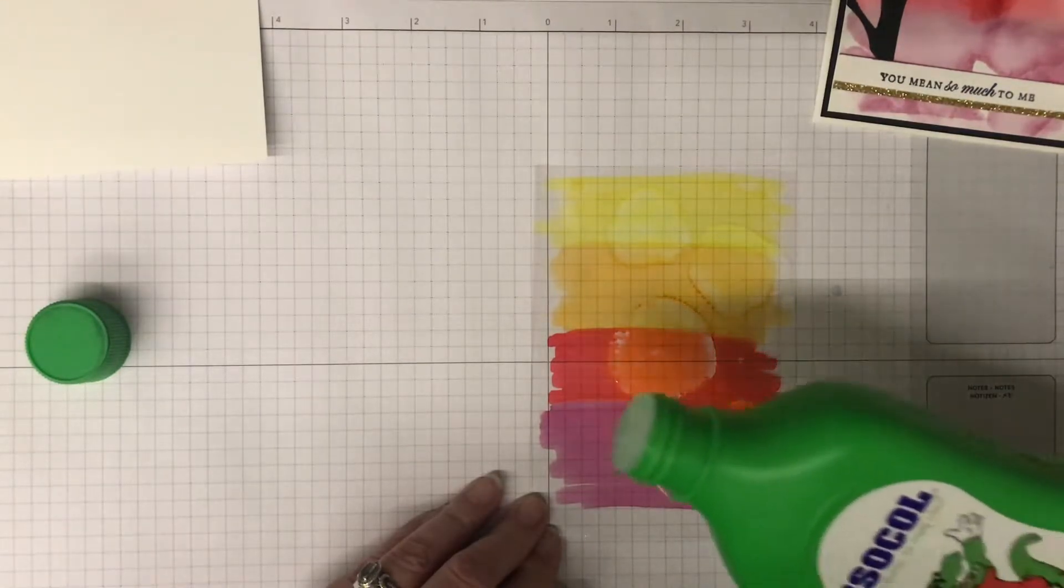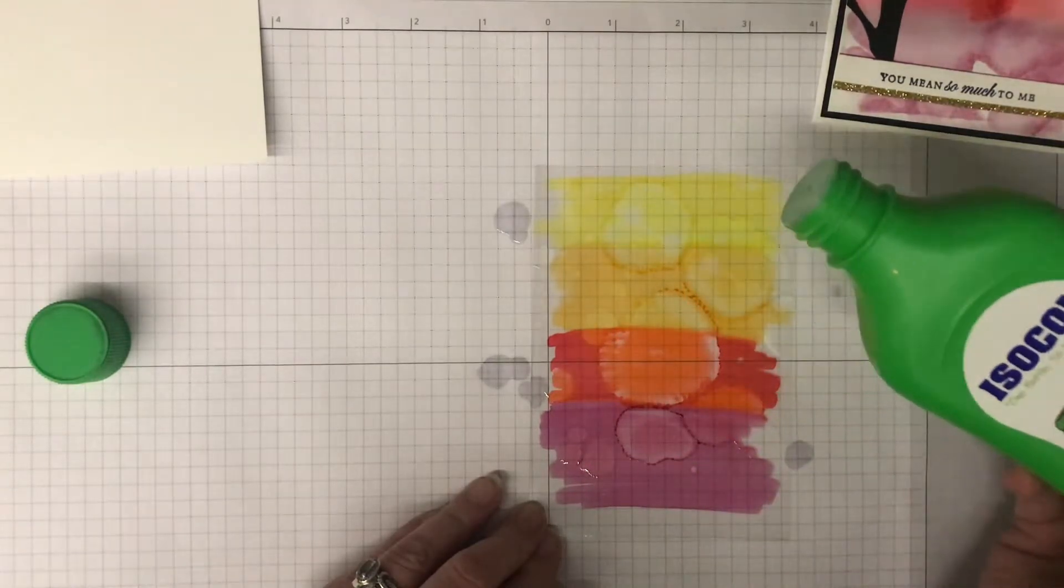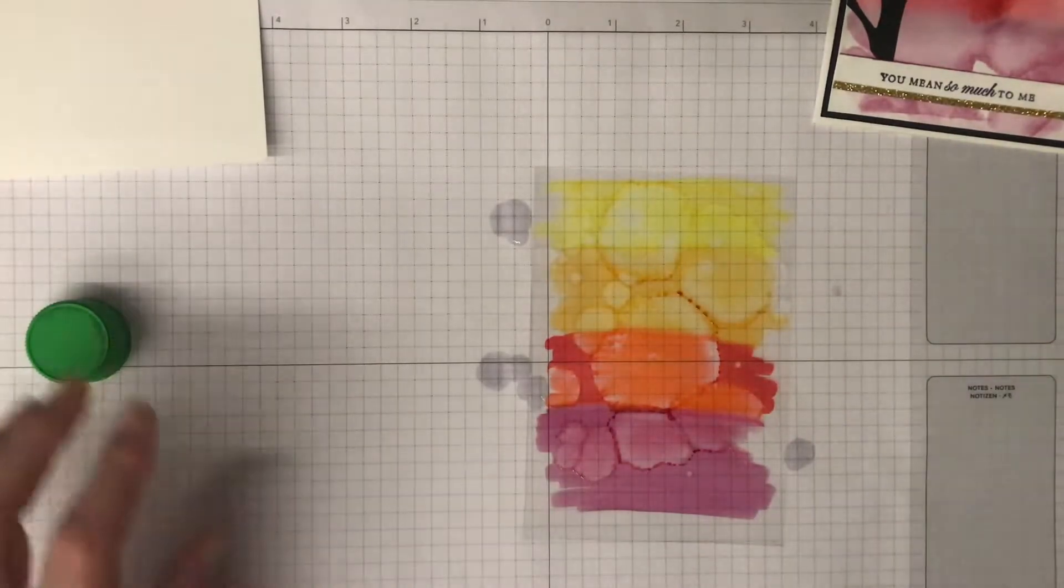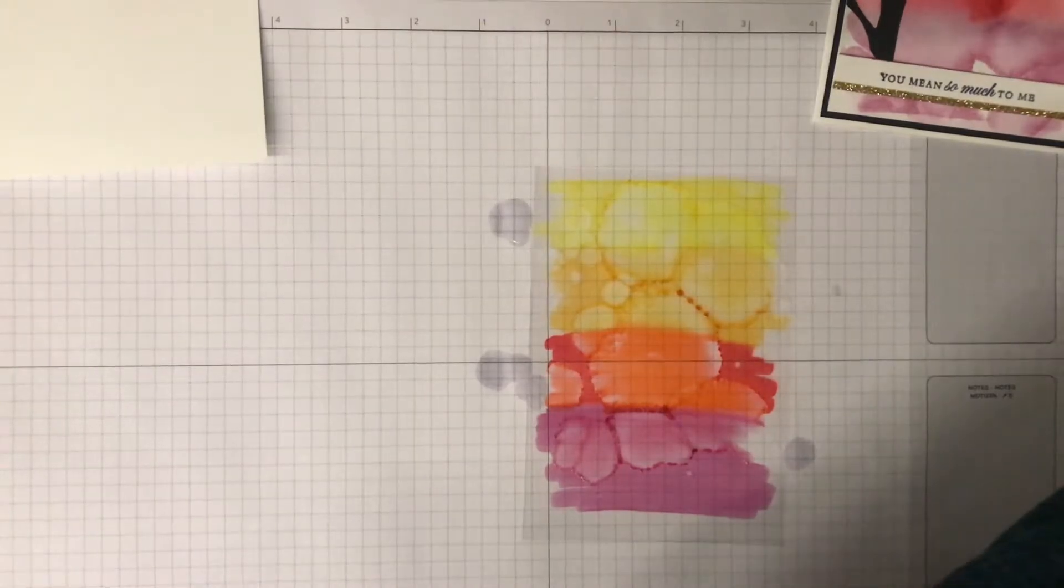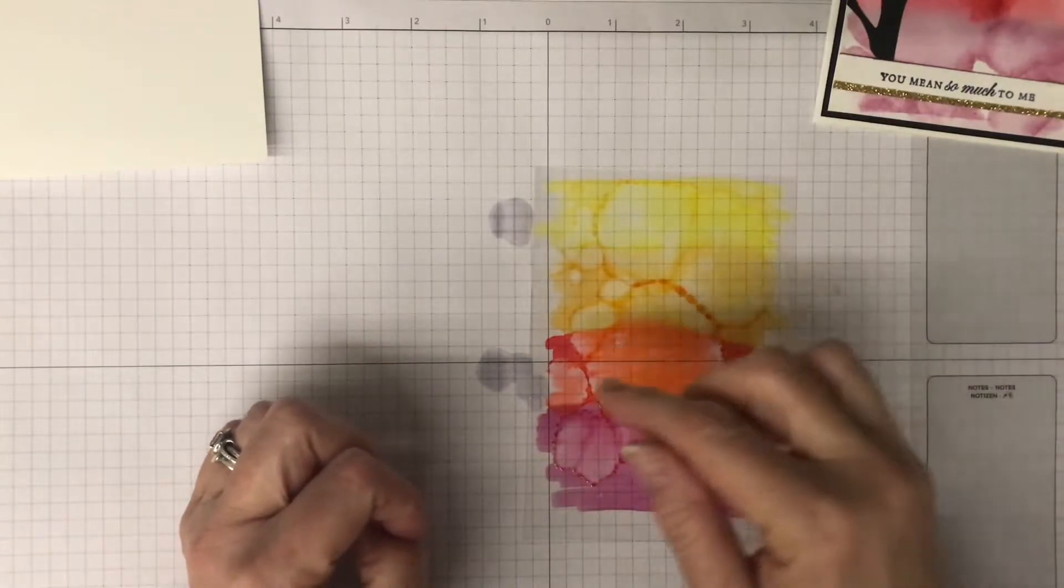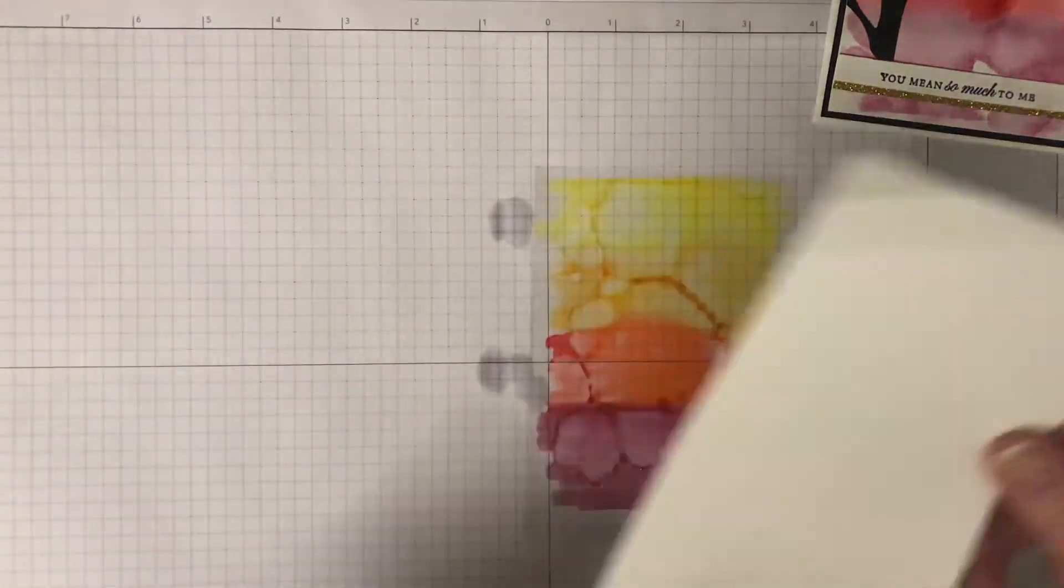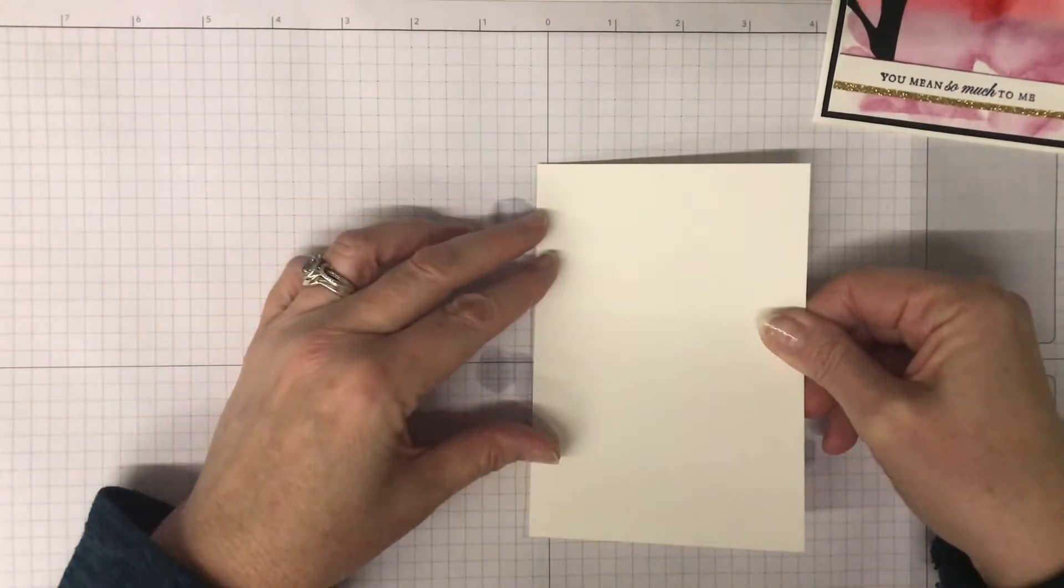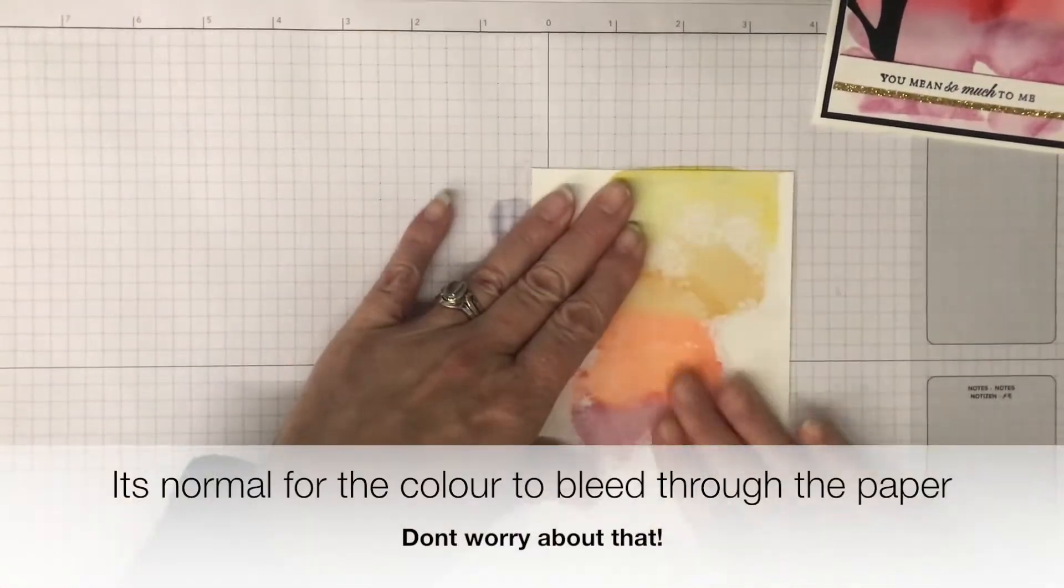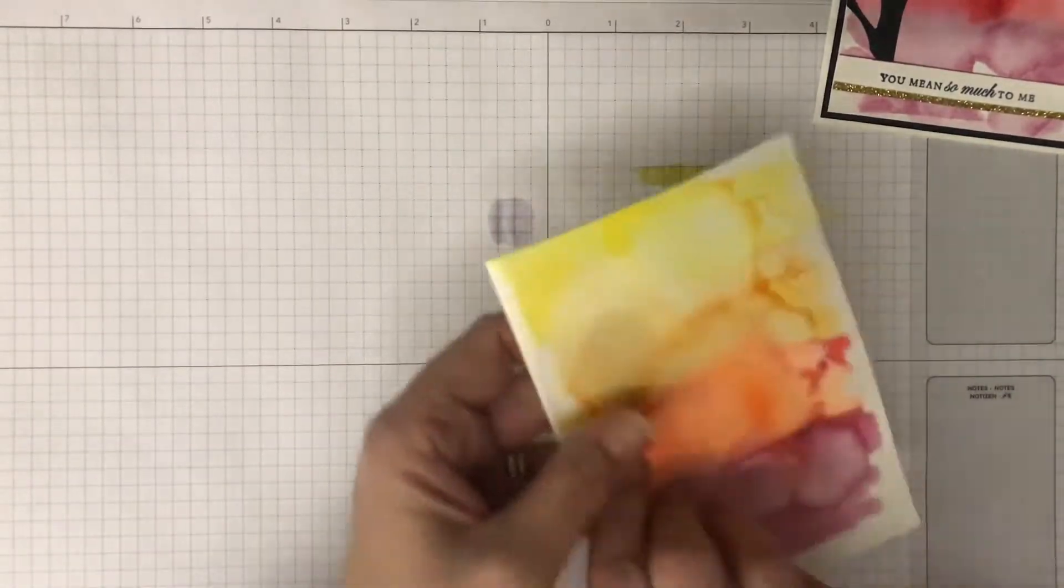If you wanted to, you could use a brush to move this around, but I'm actually not going to—I'm just going to let it spread. As you can see, the alcohol in the alcohol markers makes them spread. Then I'm going to grab this piece and just pop it straight on top of that acetate piece. Just rub it over the back.